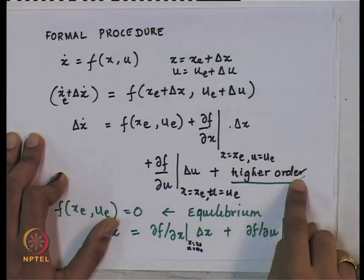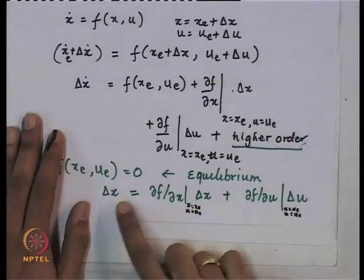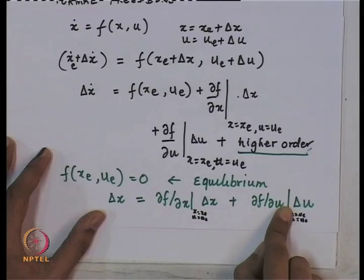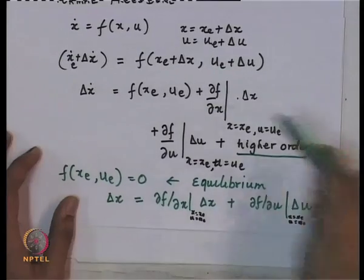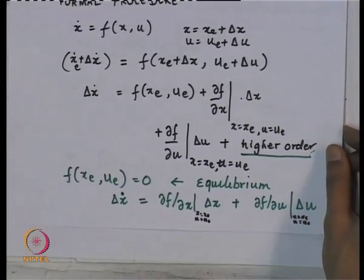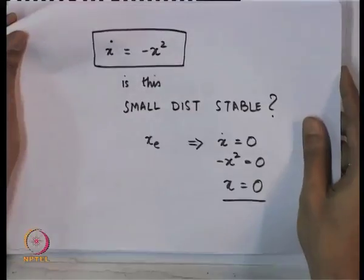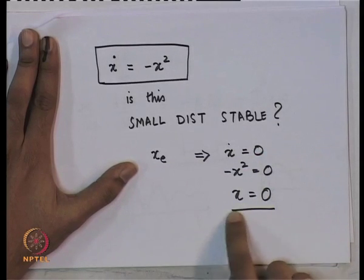This is an approximation because we neglect higher-order terms in the Taylor series expansion — terms like delta_x², delta_u², etc. What we end up with is a linearized system, with the understanding that it will give good results near the equilibrium point. If disturbances are small, this should give a good idea of how the system behaves.